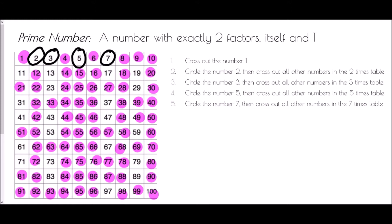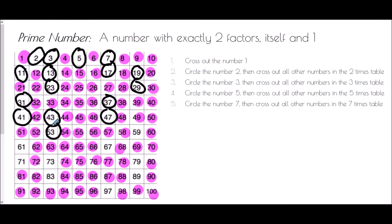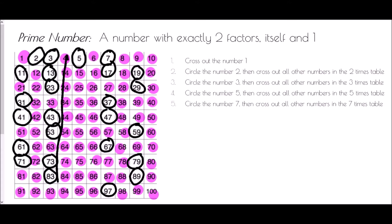What we're left with are very special numbers — they only have two factors: themselves and one. These are our prime numbers. There are many more primes going on to infinity, but these are the ones between one and a hundred. By colouring in multiples, we've identified anything in another times table — for example, all numbers in the even column from four to 94 are in the two times table and cannot be prime.